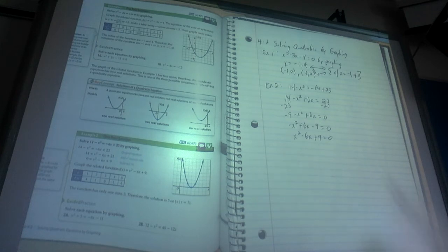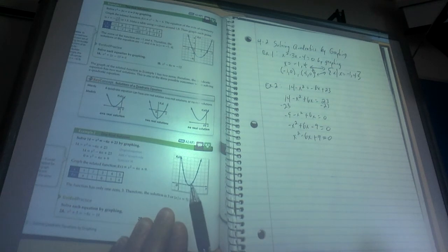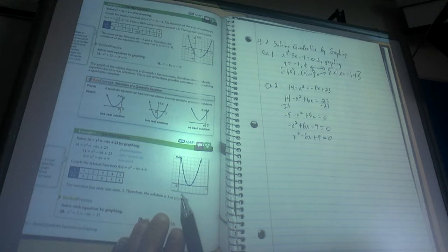But that would be getting everything on one side of the equal sign and getting it in standard form. And then you can see the graph right here. There is only one x-intercept, and it's at 3. We call that a double root.